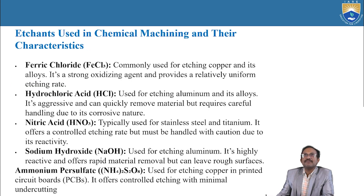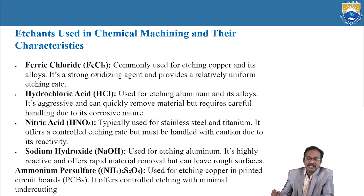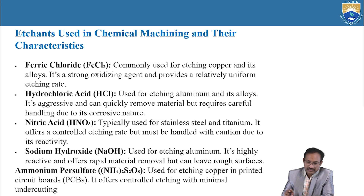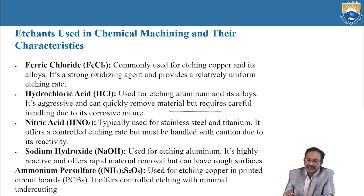Etchants used in chemical machining and their characteristics. Ferric chloride (FeCl₃): commonly used for etching copper and its alloys; it is a strong oxidizing agent and provides a relatively uniform etching rate. Hydrochloric acid (HCl): used for etching aluminum and its alloys; it is aggressive and can quickly remove material but requires careful handling due to its corrosive nature.